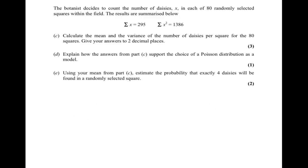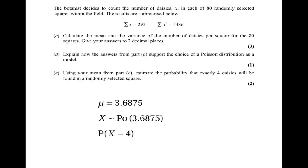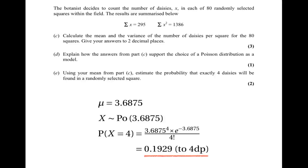The final part asks us to use the mean number of daisies to calculate the probability of getting exactly four daisies in a randomly chosen square. The exact mean was 3.6875, so X has the Poisson distribution with parameter 3.6875. We can't use the tables here, so we apply the formula: 3.6875 to the power of 4 times e to the power of minus 3.6875, divided by 4 factorial, which gives 0.1929 to four decimal places.